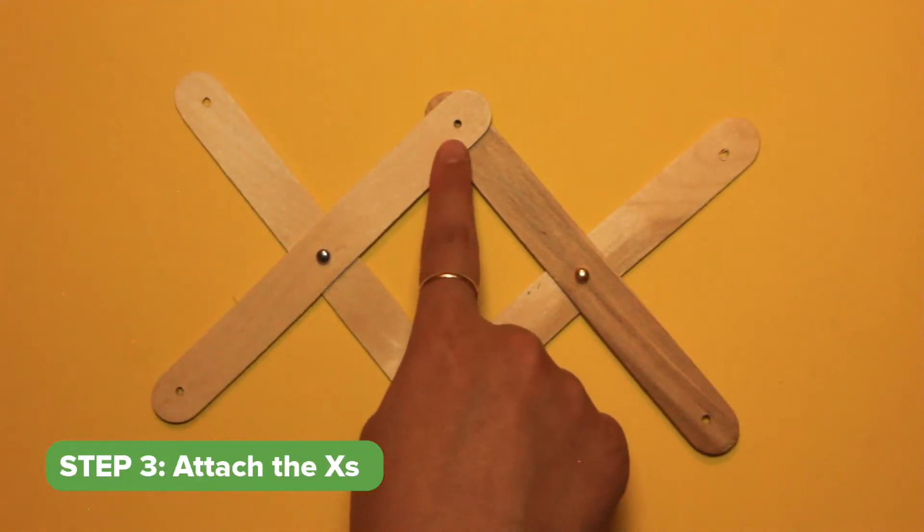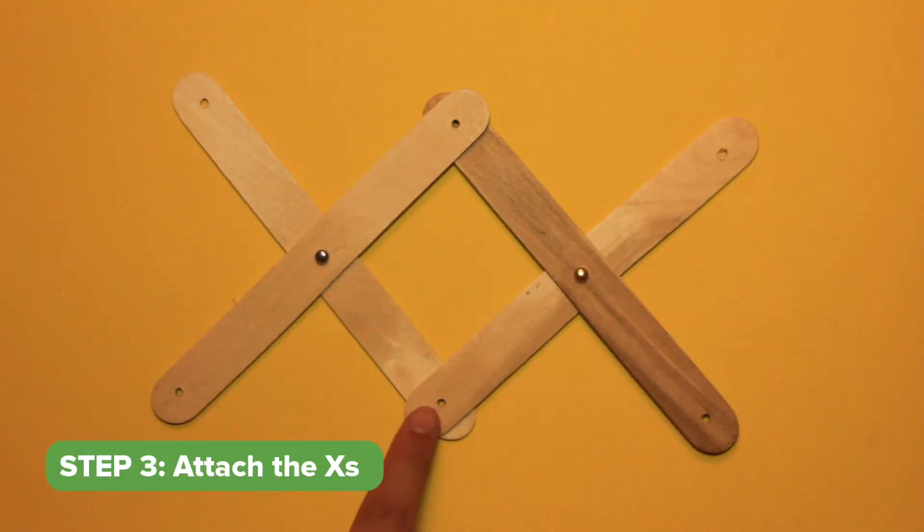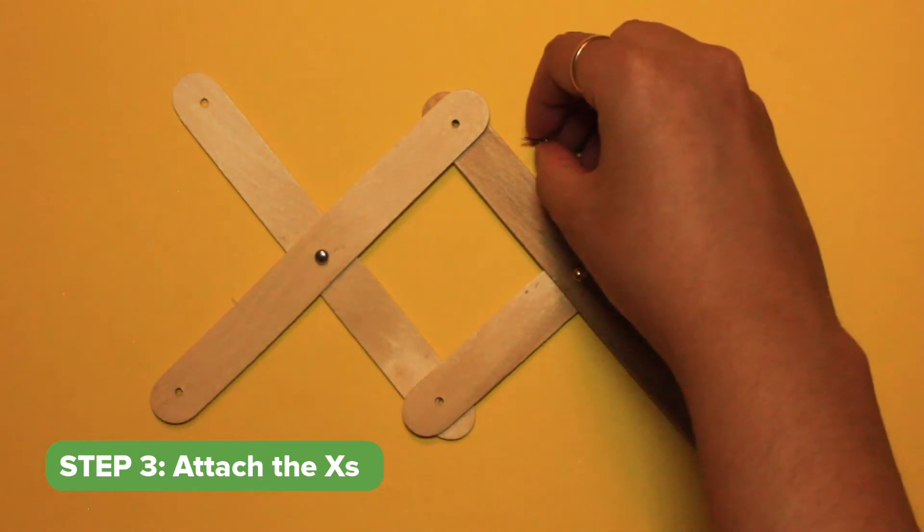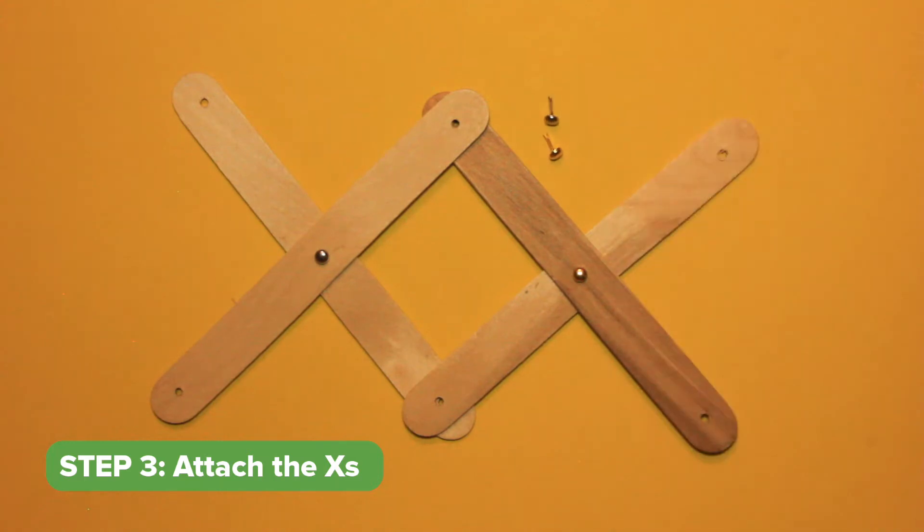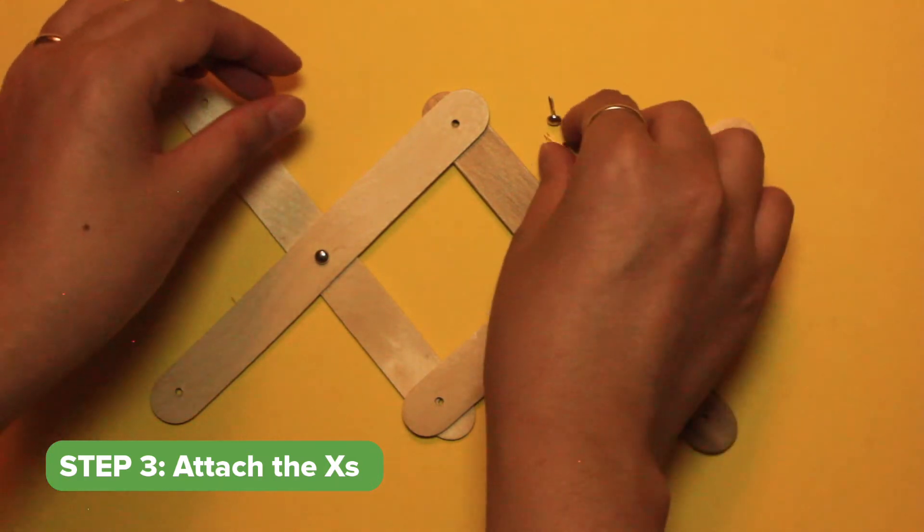Step 3. Take two X's and line them up here and here. The holes on each end should be overlapping. Place a fastener on each end to secure the sticks together.